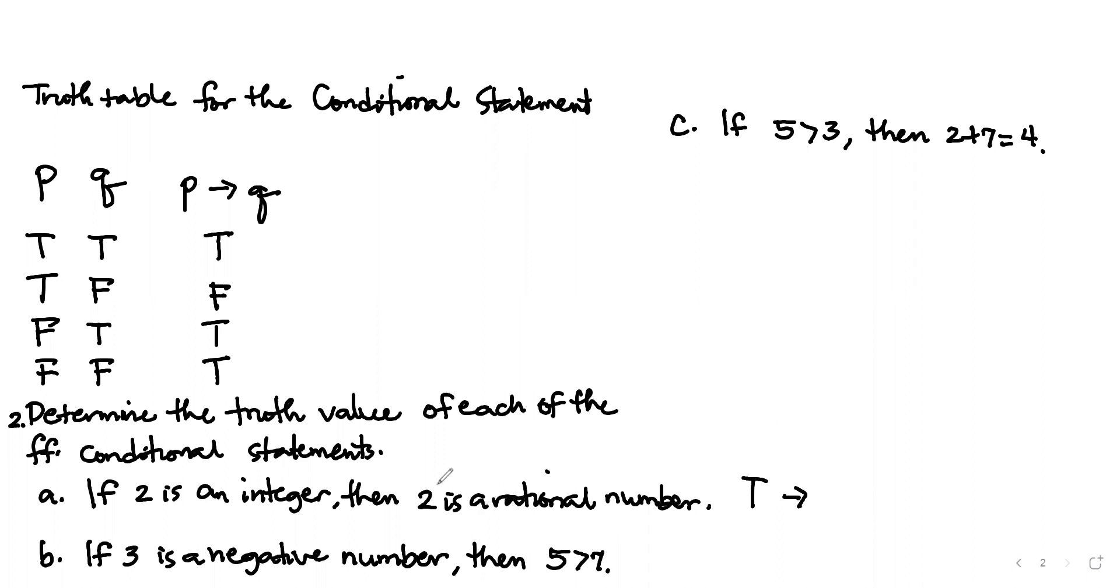Two is an integer, yes. Two is a rational number, yes, because we can write it in rational form, which is two over one equals two. Since our consequent is true, therefore the truth value for letter A is true.